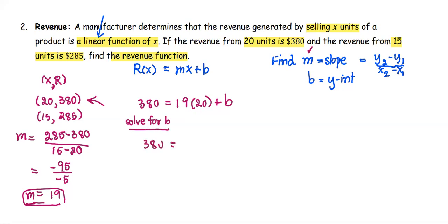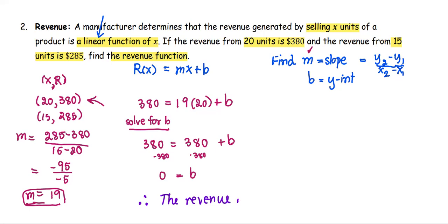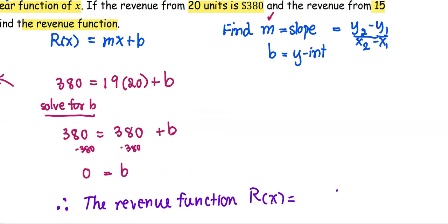So 380 equals 19 times 20, which is 380, plus b. To solve for b, subtract 380 from both sides. We get 0 equals b. Therefore, the revenue function r(x) is in the form m times x plus b, which is 19 times x plus 0. Simplified, the revenue function r(x) equals 19x.